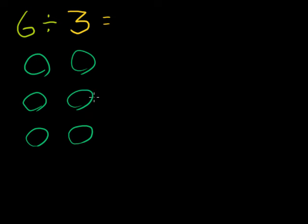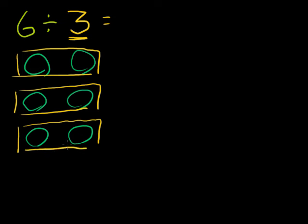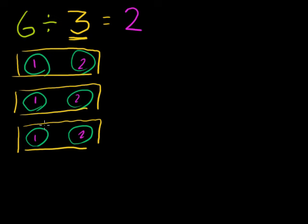So here are our six bell peppers. I'm going to divide into three groups: one group right there, the second group right there, and then the third group. Each group will have exactly one, two bell peppers. So six divided by three is equal to two. One way to think about it: you divided the six into three groups.